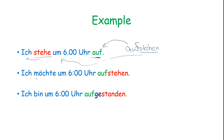When there are two verbs, like with 'müssen': 'Ich muss um sechs Uhr aufstehen' — there is no change, the separable verb goes at the end as a whole. And in the perfect tense: 'Ich bin um sechs Uhr aufgestanden' — here we use the past participle form, as we read in present perfect and how we use them.